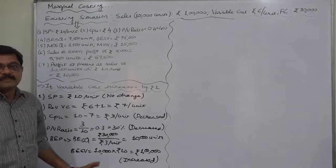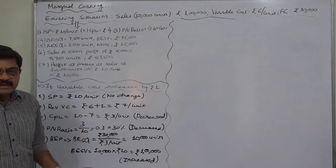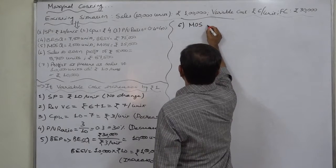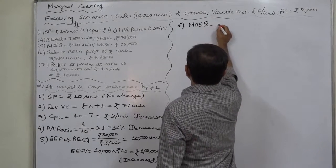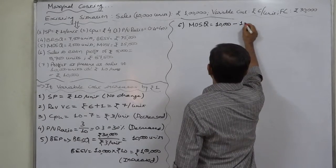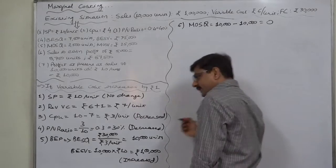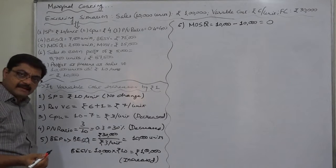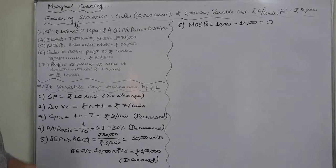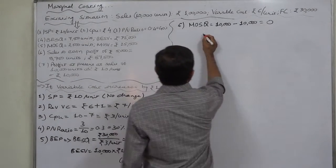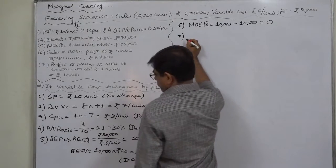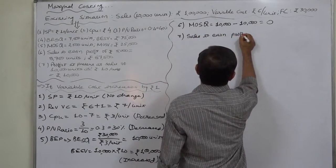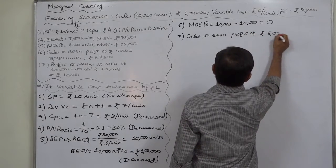Existing sales of the firm is 10,000 units, so zero margin of safety, that means zero profit. Yes, because the firm at 10,000 units will only break even, and if it makes actual sales of 10,000 units, the margin of safety is zero, the profit is also zero. Now, sales to earn profit of ₹5,000: